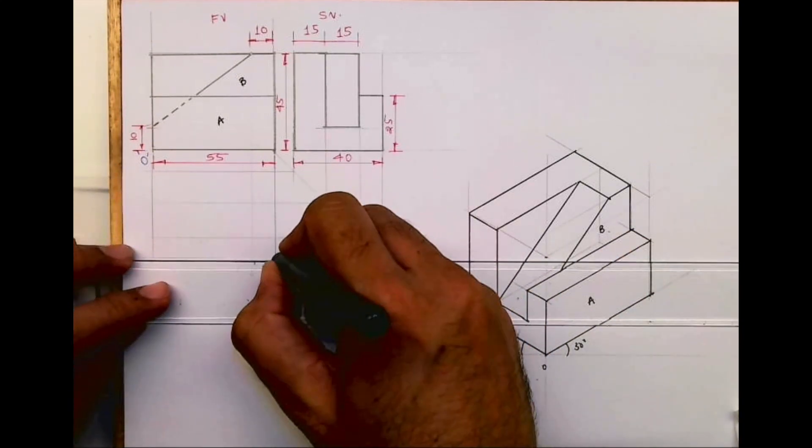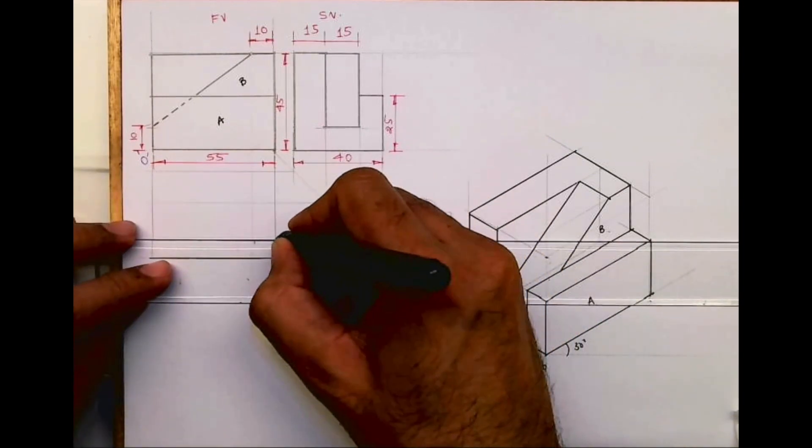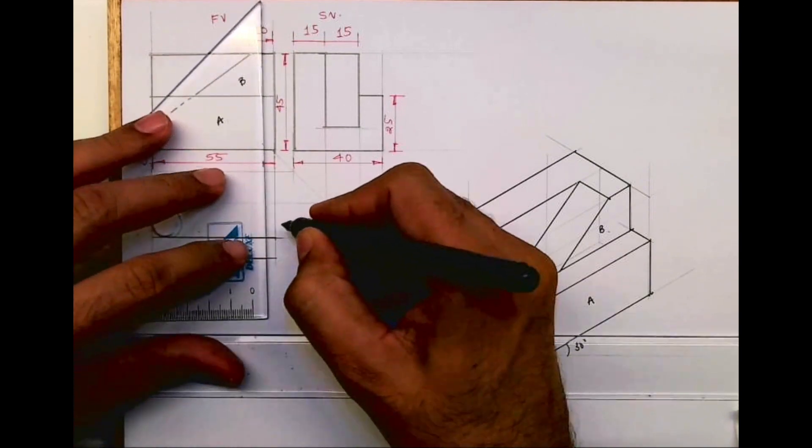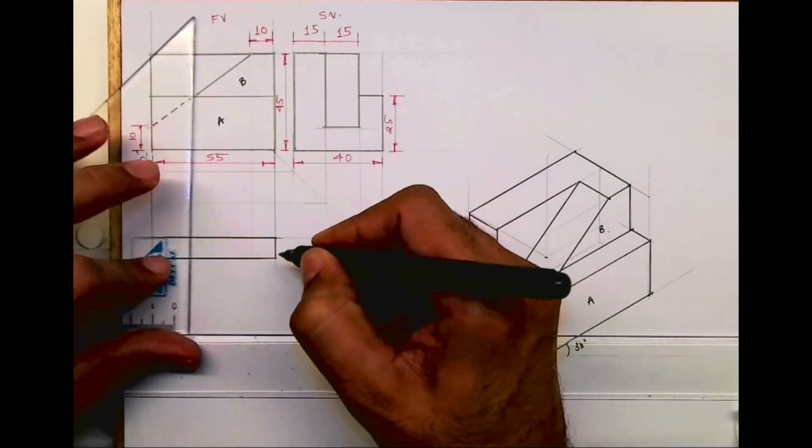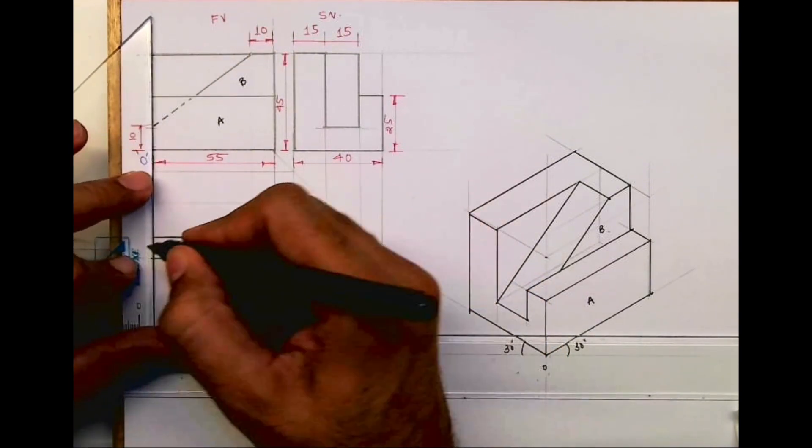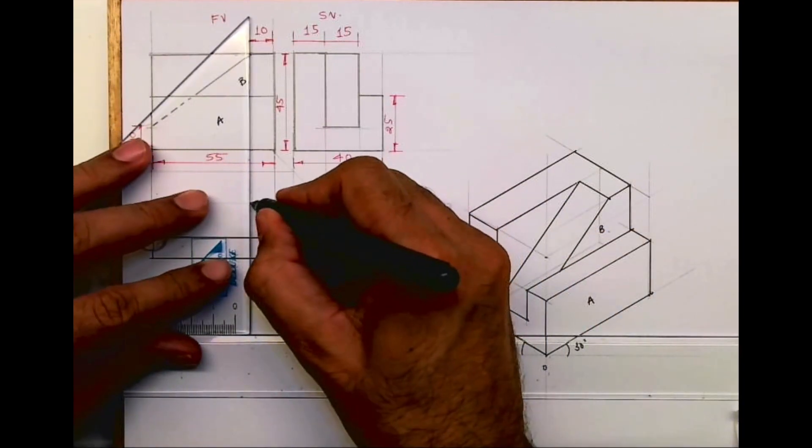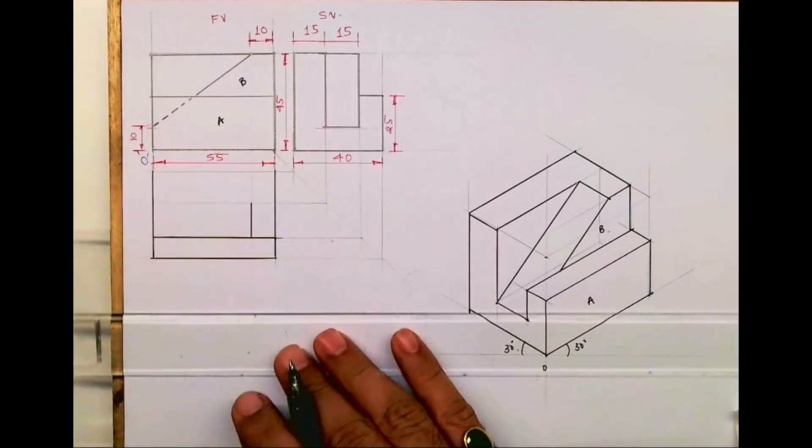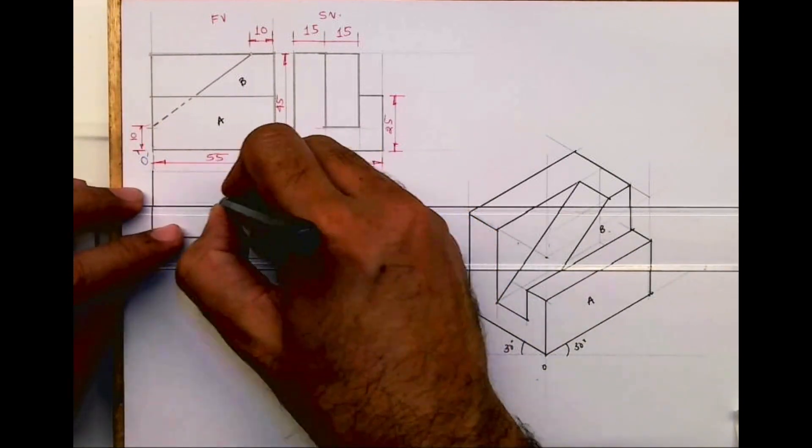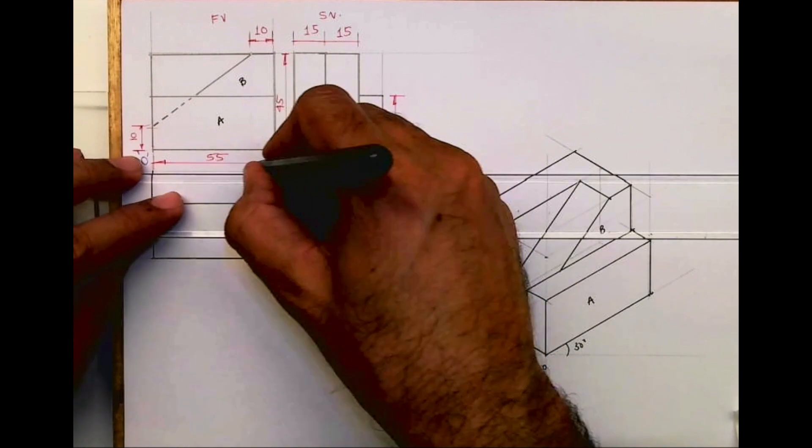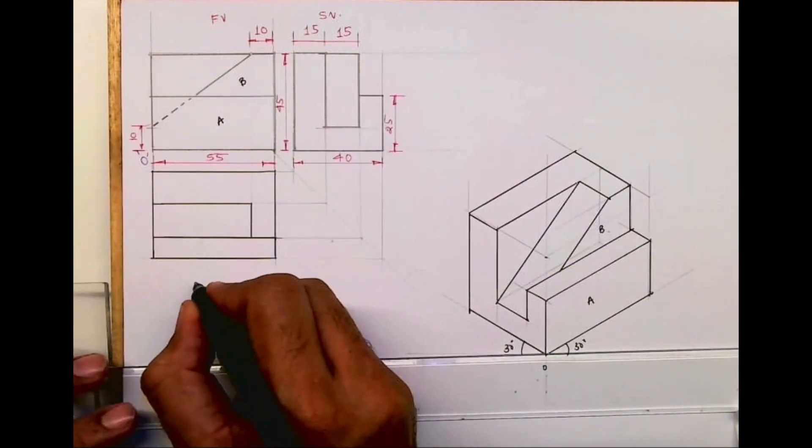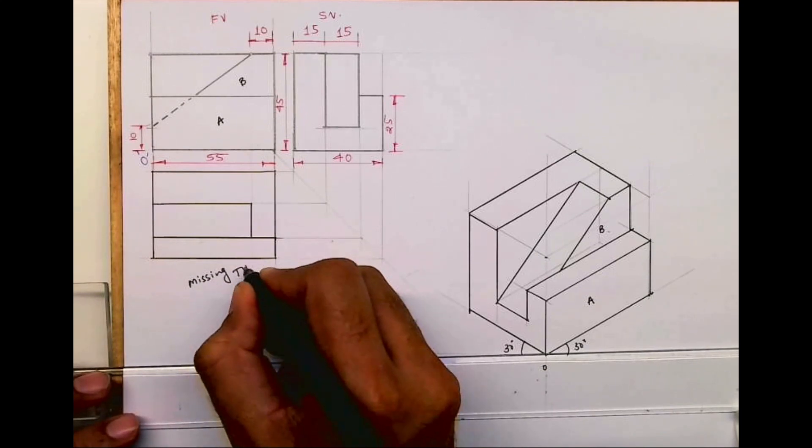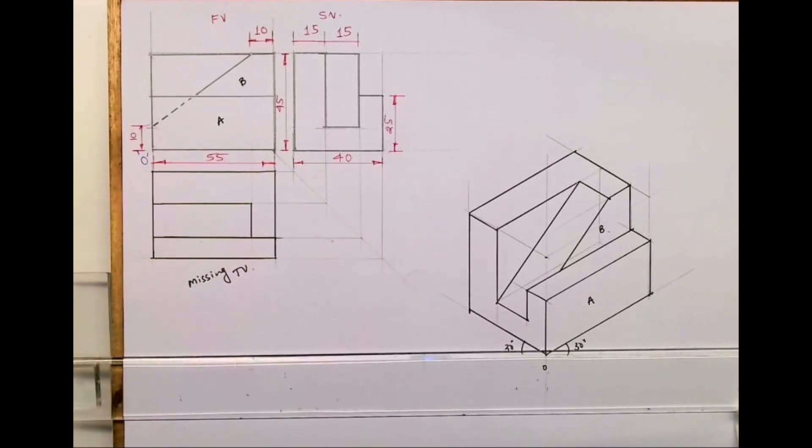So this portion will be dark. This will be dark. This is that slope and this is that part. So we are done with the missing top view. I hope all of you have understood this. Thank you.